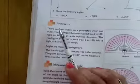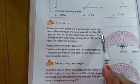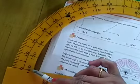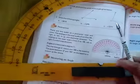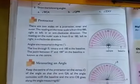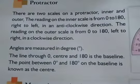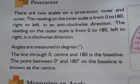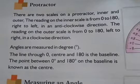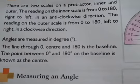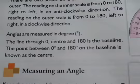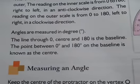The reading on the inner scale is from 0 to 180 degrees, right to left — that is, in an anti-clockwise direction. The reading on the outer scale is from 0 to 180 degrees, left to right in a clockwise direction. Angles are always measured in degrees.